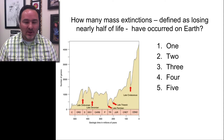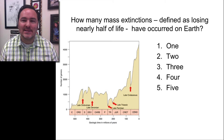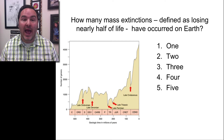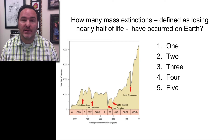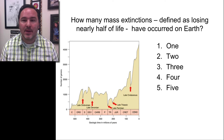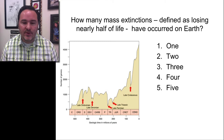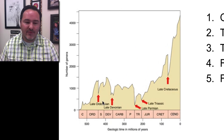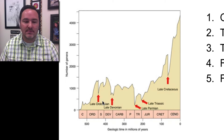As we look at this graph, I can ask the question: how many mass extinctions — if we define them as losing at least half of the amount of diversity on the planet at that particular time — how many mass extinctions have occurred? Well, if we look at this graph we can see there are basically five main mass extinctions.